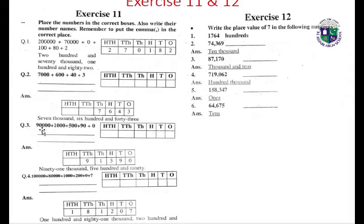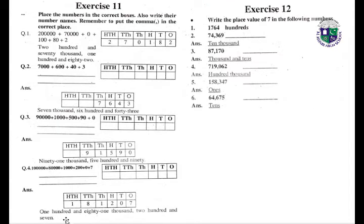9,100. Question number four: one hundred and eighty-one thousand two hundred and seven — 181,207.